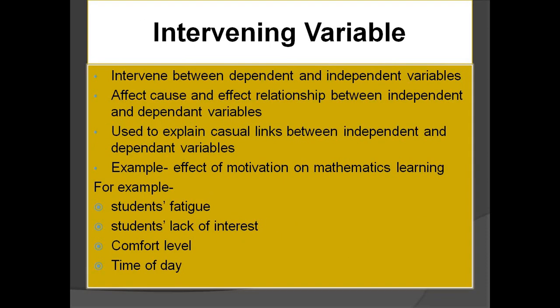Moving towards intervening variables — these are variables which intervene between the dependent and independent variables and affect the cause-and-effect relationship between them. For example, in studying the effect of motivation on mathematics learning, student fatigue can be an intervening variable — if a student is tired, motivation will not work. Similarly, a student's lack of interest, or if a student doesn't like the teacher, that motivation will not work. These variables intervene in the relationship between independent and dependent variables.